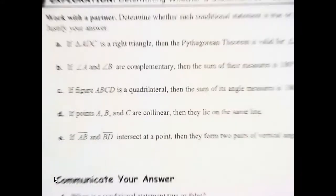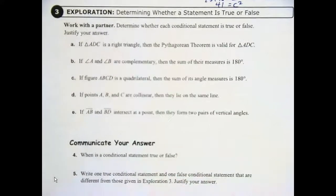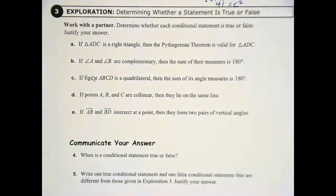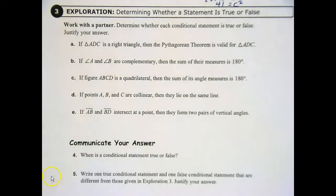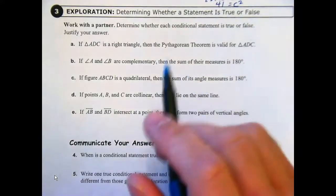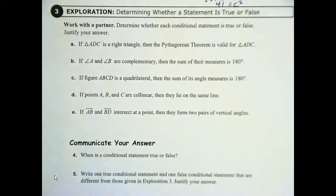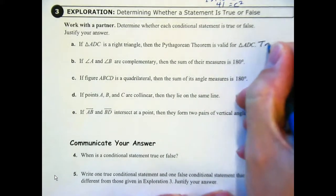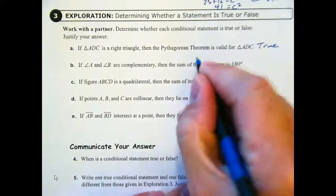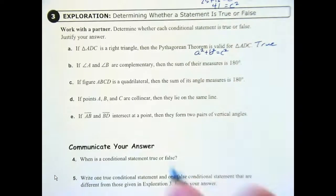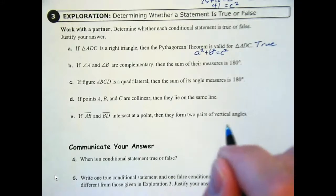Exploration Three — work with your partner. Remember to justify your answers; on the test you lose half credit without justification. Letter A: if triangle ADC is a right triangle, then the Pythagorean theorem is valid. True — the Pythagorean theorem works on all right triangles: a² + b² = c². It's not true for every triangle, only right triangles.